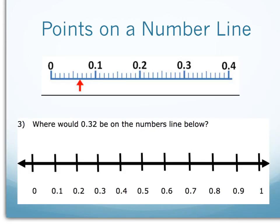What about recognizing these points on a number line? This red arrow comes between zero and zero point one, so I know it has to be less than a tenth. When I think less than tenths, I know I'm really counting hundredths — one hundredths, two hundredths, three hundredths, four hundredths, five hundredths, six hundredths, seven hundredths, eight hundredths, nine hundredths, ten hundredths. My arrow is pointing at seven hundredths, so I would label it as zero point zero seven, or seven hundredths.